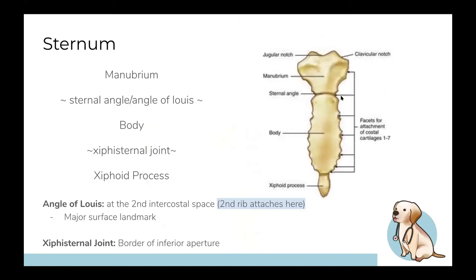The sternum: you have the manubrium which is the top bit, the body, and the xiphoid process. The really important thing about the sternum is the joints between each part. You have the xiphisternal joint between the xiphoid process and the body of the sternum - that's also part of the inferior aperture boundary. That joint isn't super important, but the sternal angle is incredibly important.